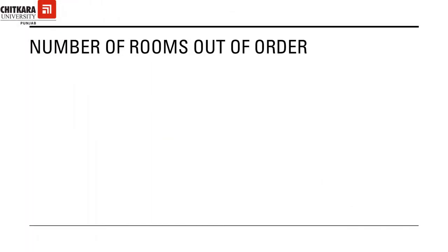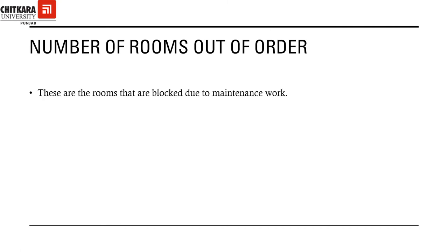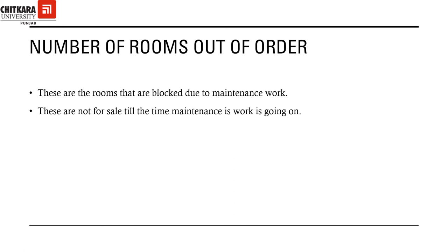Number of rooms out of order. What does out of order mean? Due to some maintenance issues, there are certain rooms that may not be considered suitable for sale and will be blocked. These rooms are called out of order rooms and they will not be available for sale until the maintenance work is done. Considering this, they will also reduce the number of rooms available for sale, so we will again use a negative sign for forecasting purposes.